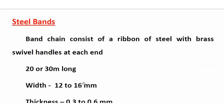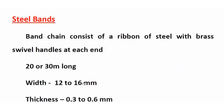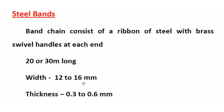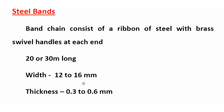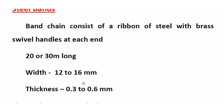Next, steel bands — also called band chain. Steel bands consist of a ribbon of steel with brass swivel handles at each end. The chain ends are provided with swivel joints. Steel bands are available in 20 or 30 meter lengths, with a width of 12 to 16 mm and thickness of 0.3 to 0.6 mm.